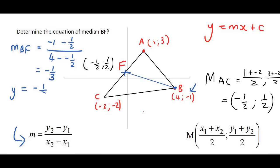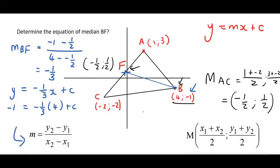So we can go y = (−1/3)x + c. To find c you choose a point on that line — you could plug in point F or you could plug in point B. I'm going to plug in point B, using −1 as the y value and 4 as the x value. If you do this you would find that c is 1/3. Therefore the final answer will be y = (−1/3)x + 1/3.